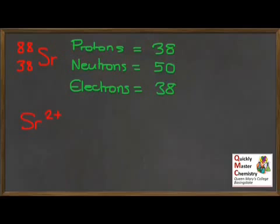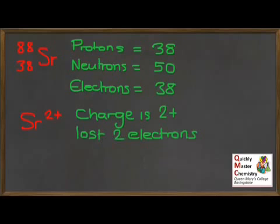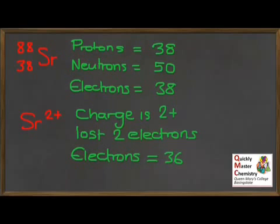Strontium forms a 2-plus ion. Pause the video — how many electrons would you expect to see for a strontium ion? If we work it through: the charge is 2-plus. 2-plus means that it's lost 2 electrons. Be careful — it's easy to think 'plus' means it's gained something. Remember, the 2-plus shows the charge, and you gain positive charge by losing the negative electrons. If it's lost 2 electrons, we've gone down from 38 to 36 electrons.